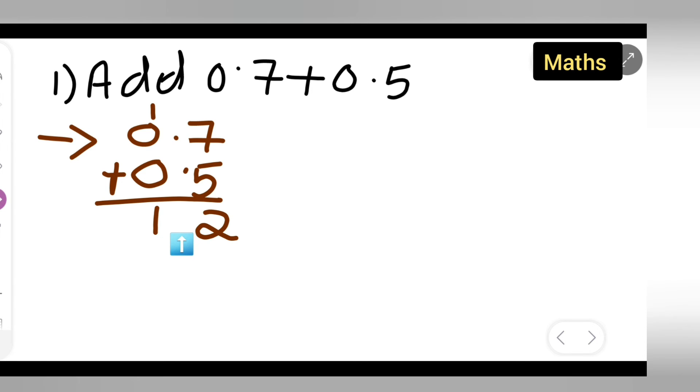Therefore, you all can say that 0.7 plus 0.5 is equal to 1.2. So I hope you all have understood how to add the numbers with the decimal point.